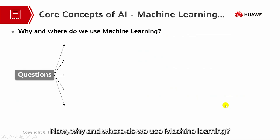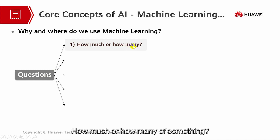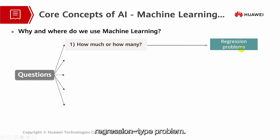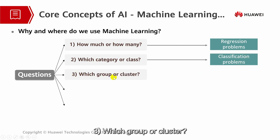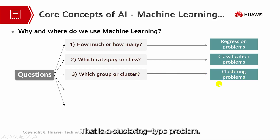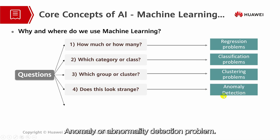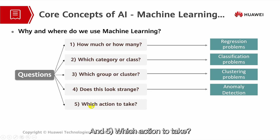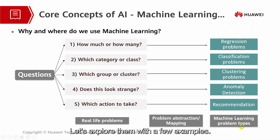Now, why and where do we use machine learning? We can ask a few questions to understand it well. First, how much or how many of something? — that maps to a regression-type problem. Second, which category or class? — that maps to a classification-type problem. Third, which group or cluster? — that is a clustering-type problem. Fourth, does this look strange? — that is an anomaly or abnormality detection problem. And fifth, which action to take? — that falls into a recommendation-type problem. Let's explore them with a few examples.